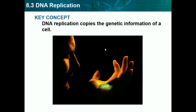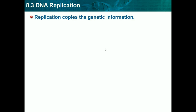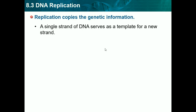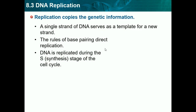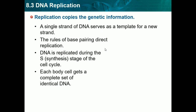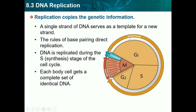Now on 8.3, DNA replication — this is the first actual step from forming DNA to protein. DNA replication copies the genetic information of a cell. A single strand of DNA serves as a template for a new strand, and the rules of base pairing direct replication. DNA is replicated during the S, or synthesis, stage of the cell cycle, and each body cell gets a complete set of identical DNA. In synthesis, the DNA duplicates and prepares for mitosis or meiosis.